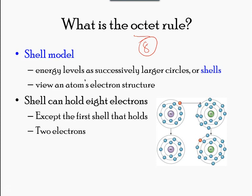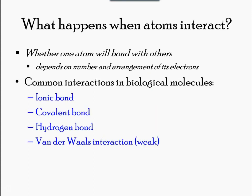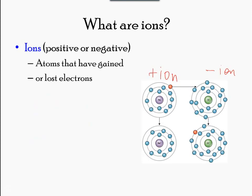An atom that does not contain equal numbers of protons and electrons is called an ion. Because the number of electrons does not equal the number of protons, each ion has a net charge. Positive ions are formed by losing electrons and are called cations. Negative ions are formed by gaining electrons and are called anions. The sodium loses its one electron and becomes a positively charged ion. The chlorine atom gains the one electron and becomes a negatively charged ion.